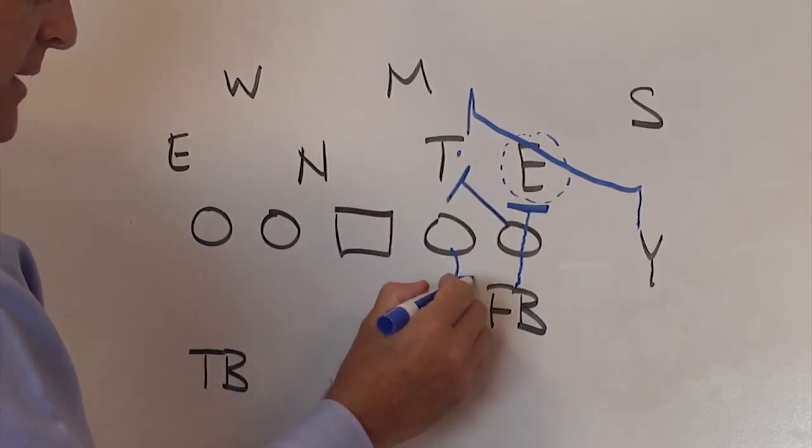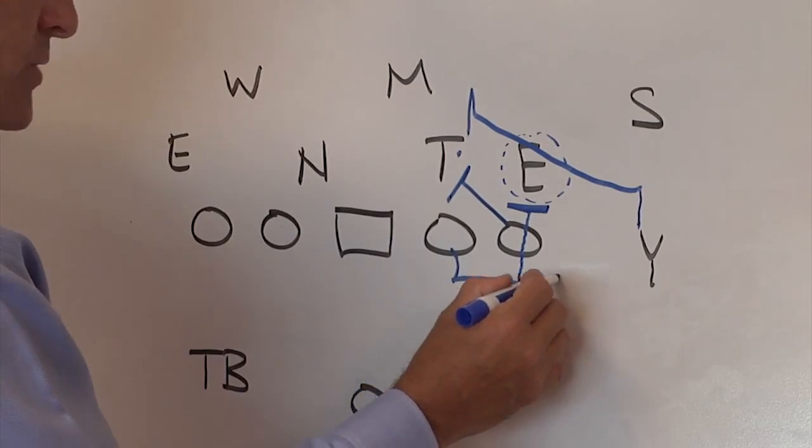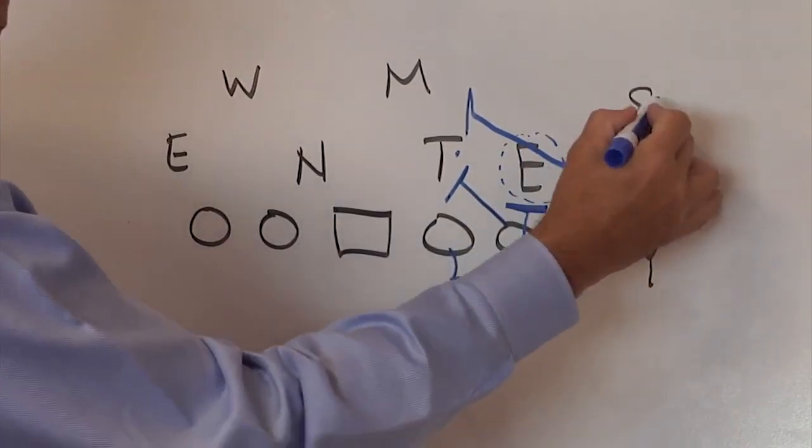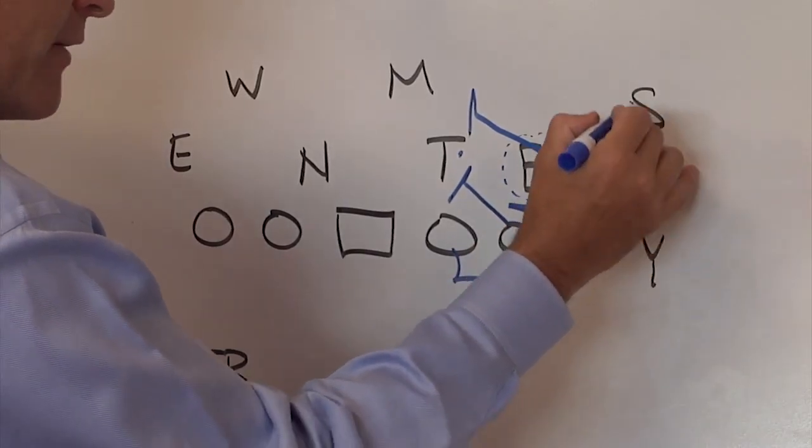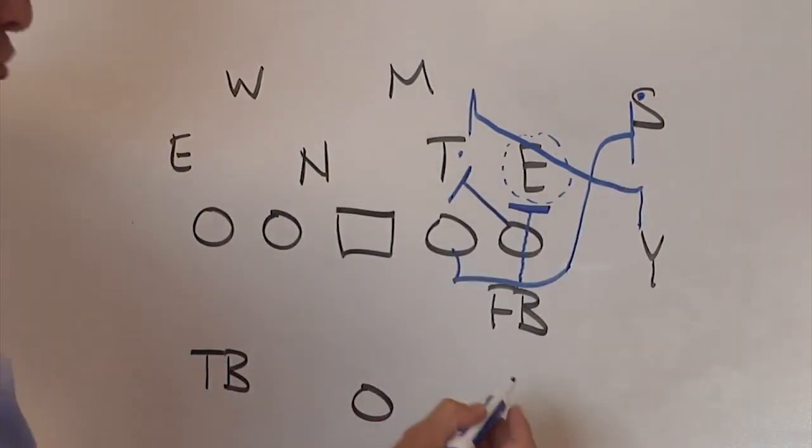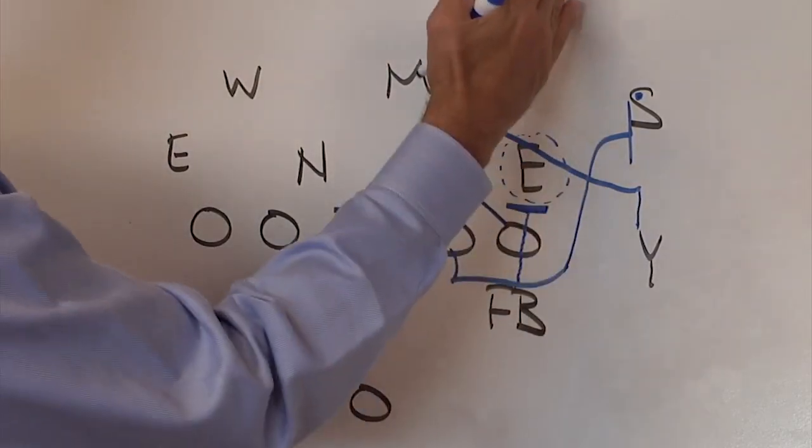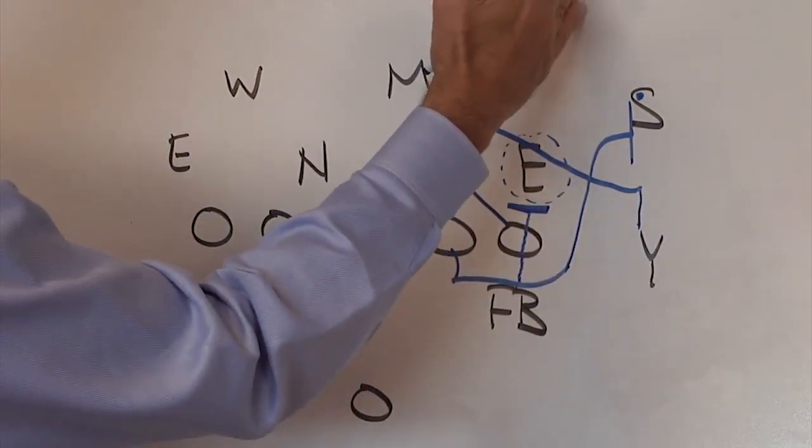Our onside guard's job is to get depth, go tight, get his eyes on the flat defender, and we tell him to run a question mark and to kick out. His hat needs to aim high right there because we want versus zone for that ball carrier to hit it right downhill.